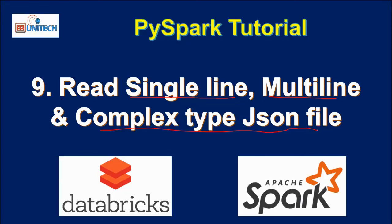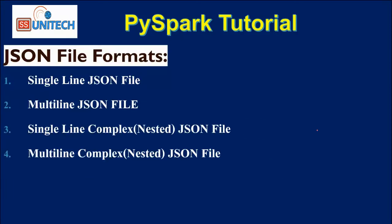Before going to the browser, let's see how many formats are available inside the JSON file. In total we have four types of format: first is the single line JSON file, second is the multi-line JSON file, next is the single line complex JSON file where nested values are present, and last is the multi-line complex nested JSON file.